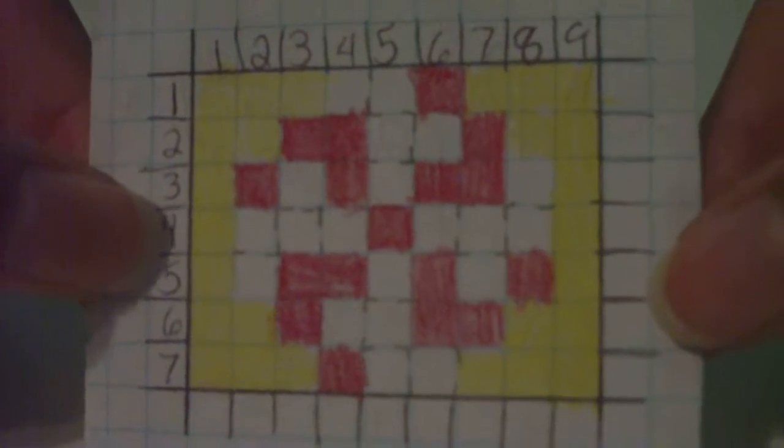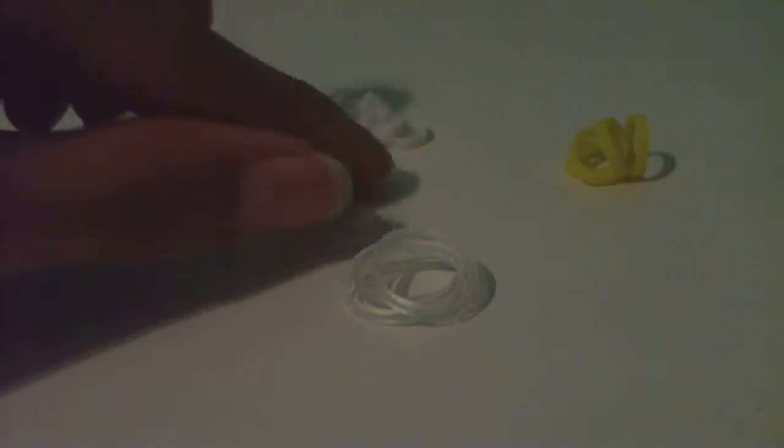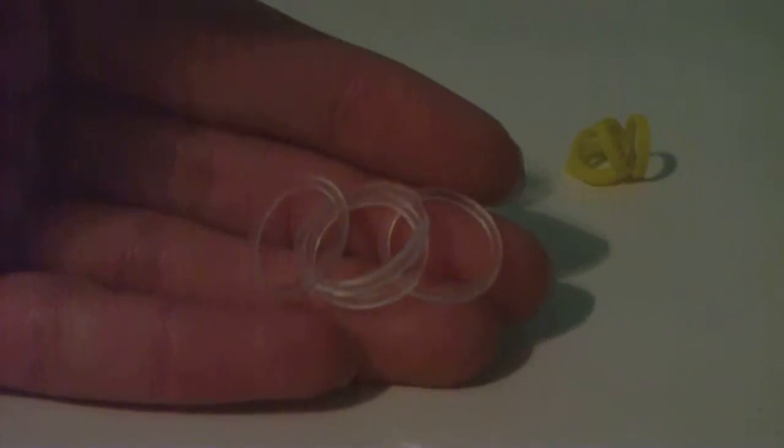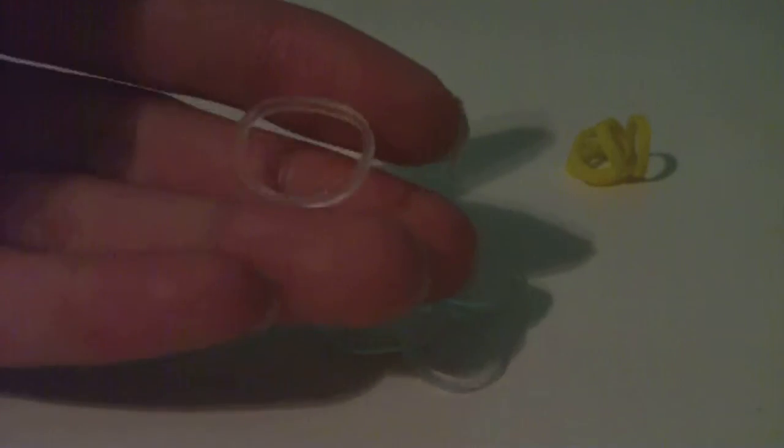There's one more group of rubber bands you'll need and these are the connecting bands or the connector bands. They are usually clear but you can make them whatever color you want.